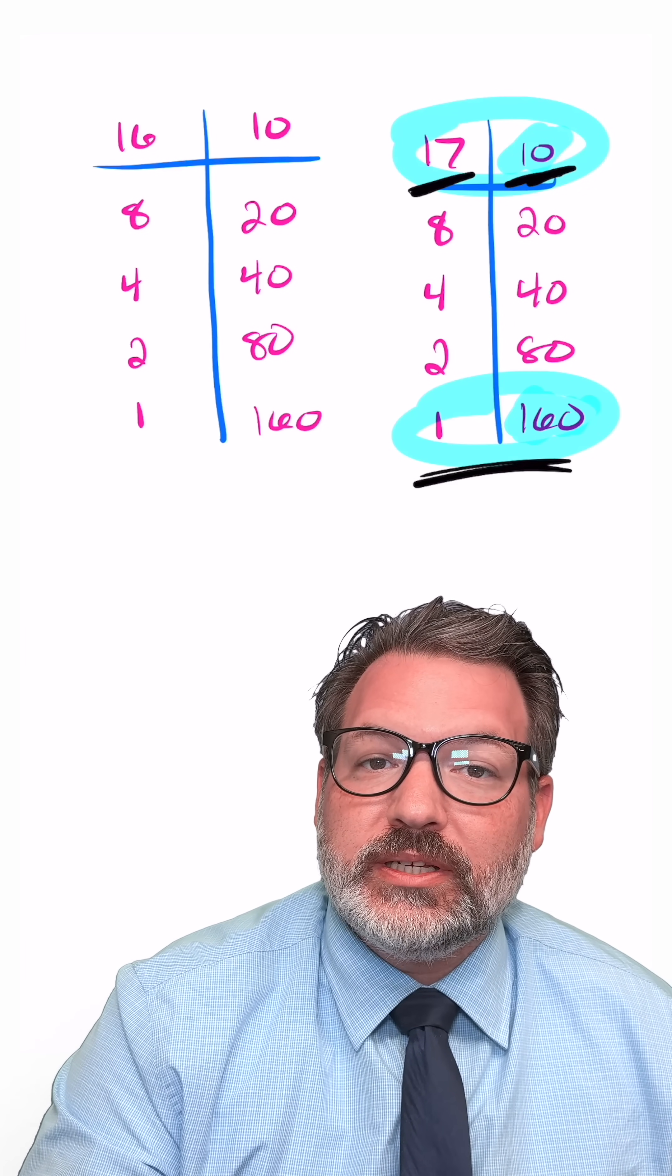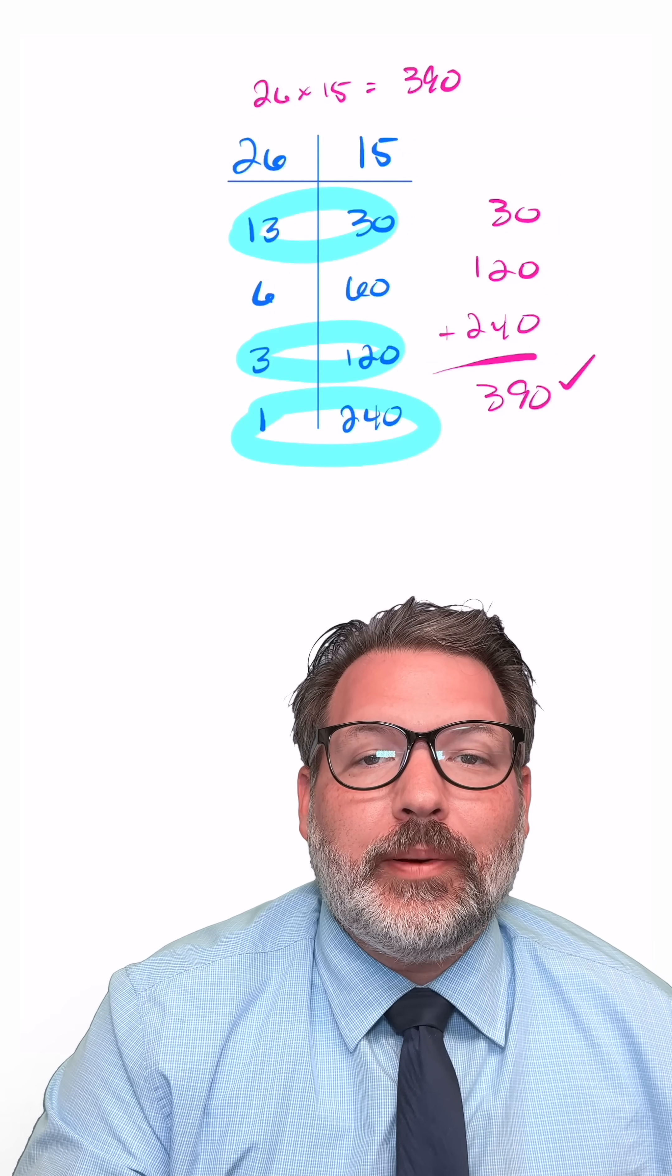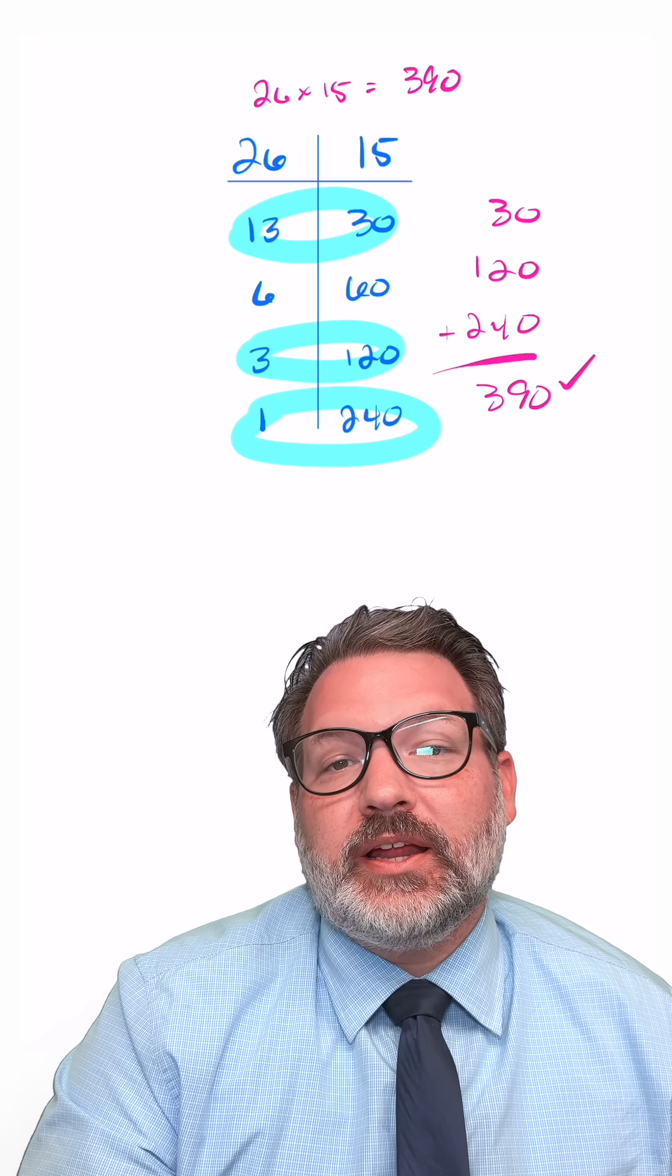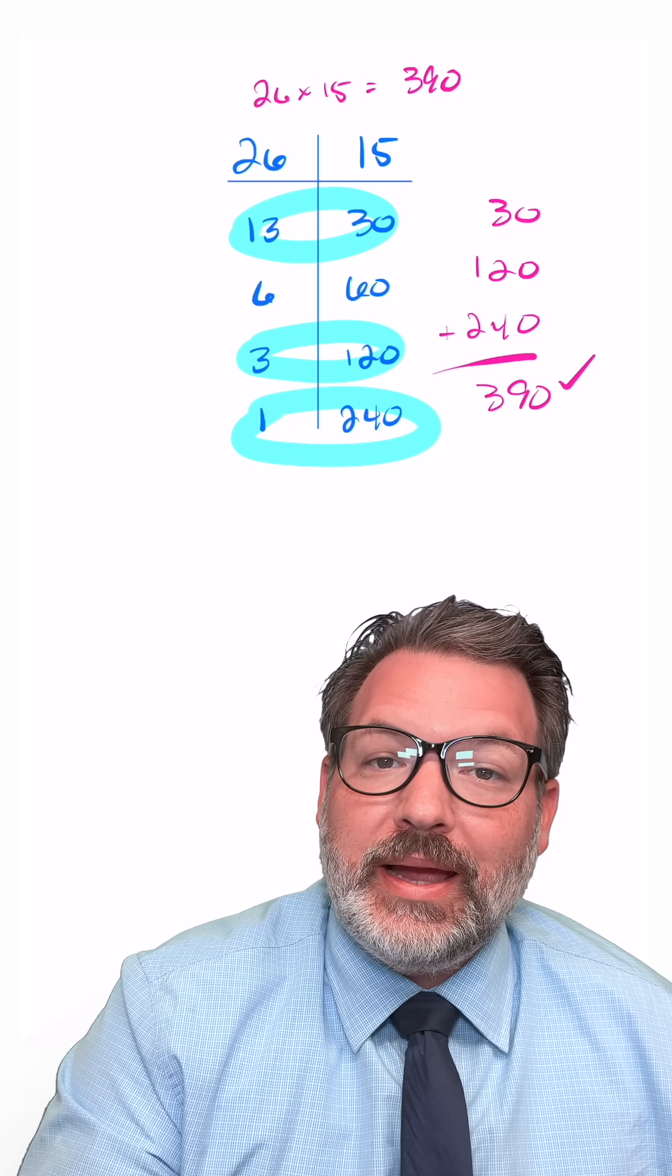Fundamentally, what this is showing us is actually a process of binary multiplication. If you consider these numbers down the left side of the table, not individual numbers, but actually places in a binary number.